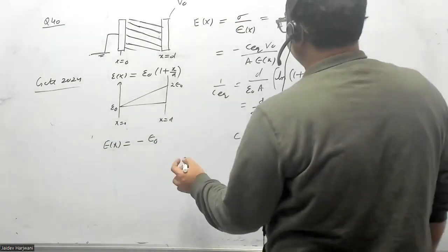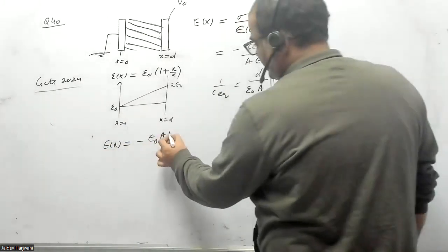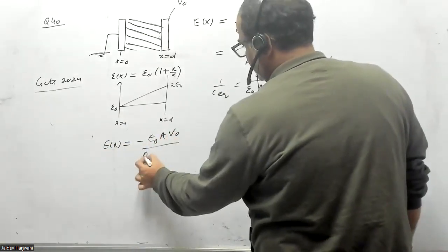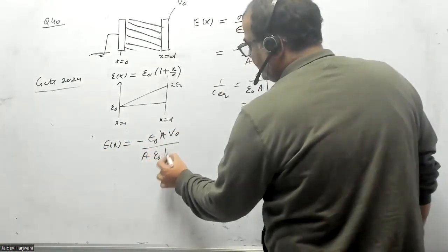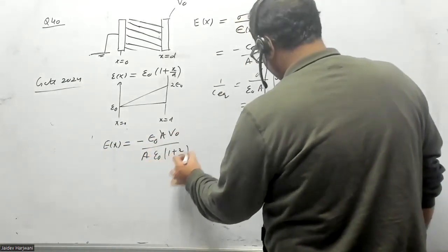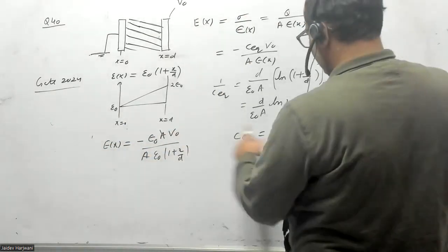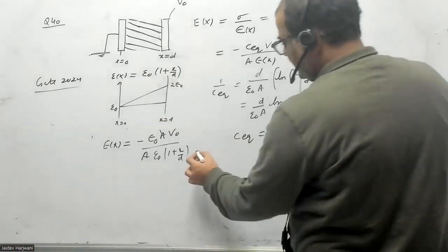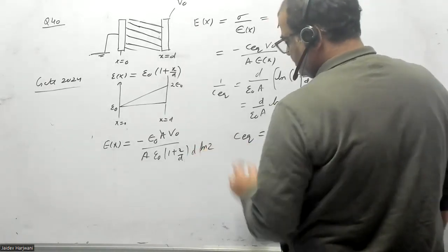ε naught A, and here C equivalent is ε naught A. This is also D over D ln 2.